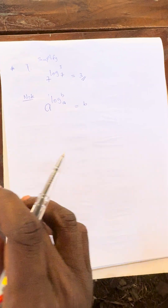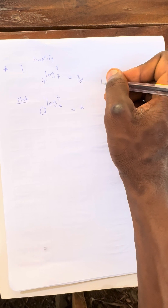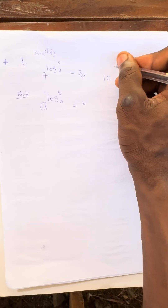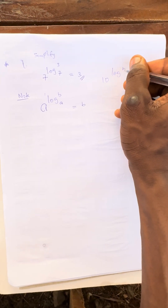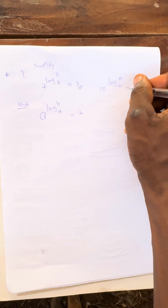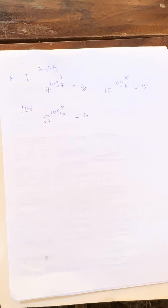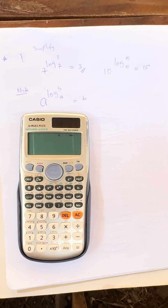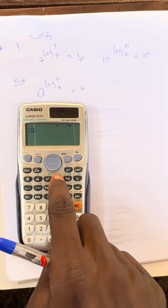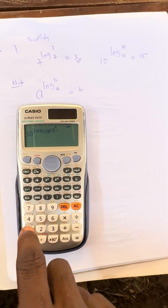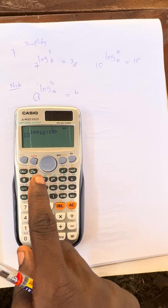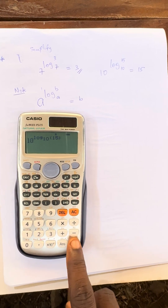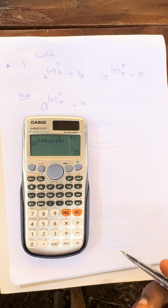Another question: if you have something like 10 raised to the power of log 15 base 10. According to the rule, the answer will be 15. If you press the same thing on the calculator — 10 raised to the power of log 15 base 10 — the answer is 15 as well. That's how to do this on the calculator.